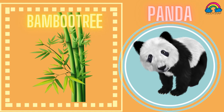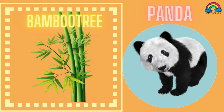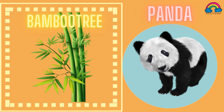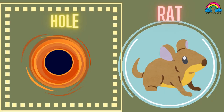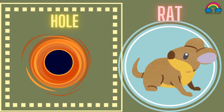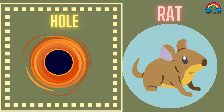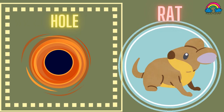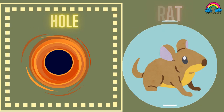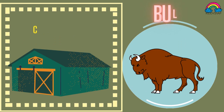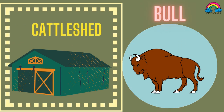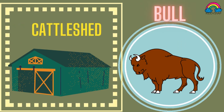Panda lives in a bamboo tree, so the house of a panda is a bamboo tree. Rat lives in holes — they make their own hole and live in it, so the rat's home is a hole. Bull lives in a cattle shed — the house of a bull is called a cattle shed.